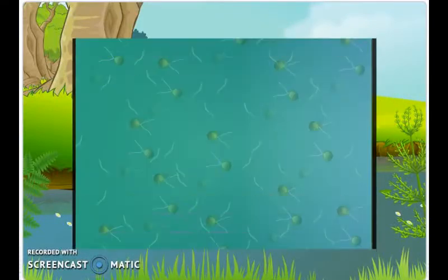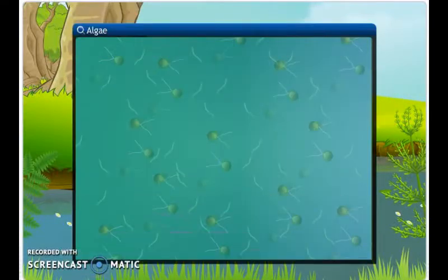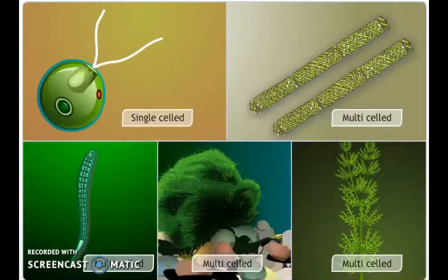Do you see something floating on the water? The algae. As you can see, the algae do not have leaves, stem, or roots. Algae can be single-celled or multi-celled. Algae are mostly autotrophic in nutrition.